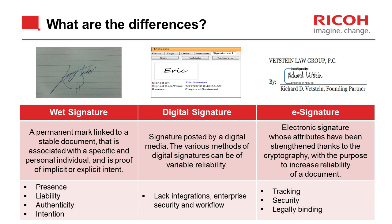It's helpful to look at the differences between a wet signature, a digital signature, and an electronic signature. A wet signature is a permanent mark linked to a stable document — usually paper — associated with a specific individual, and is proof of implicit or explicit intent. It generally requires the presence of the user to apply the mark. There are issues with liability regarding how it was applied, challenges with authenticity and forgery, and occasional challenges with demonstrating intent.